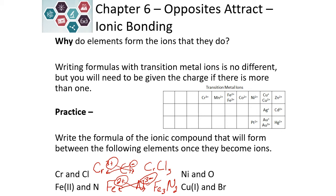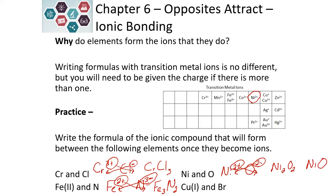We look at nickel. Nickel has a charge of plus two. Oxygen has a charge of minus two. We do cross-multiplying and get Ni₂O₂. Now this needs to be reduced because they are both two. We divide each of those subscripts by two and we get our formula of NiO.